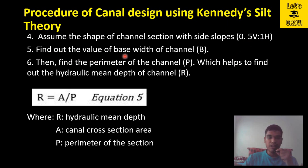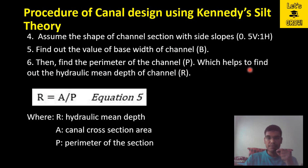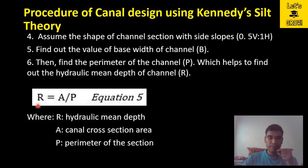Step 5: Find the base width of channel B. Since area, depth, and side slope are known, use the trapezoidal area formula to determine base width B. Step 6: Find the perimeter of the channel P, which helps find the hydraulic mean depth R. Using the base width and depth, calculate the perimeter as the bed width plus two times the sloping sides. Then calculate the hydraulic mean depth R = A / P.